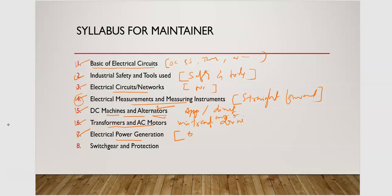Power generation covers base load plants, renewable and non-renewable energy sources, and major factors like power demands and tariffs. After that, switchgear and protection is the next topic — covering industrial switches and protection systems.